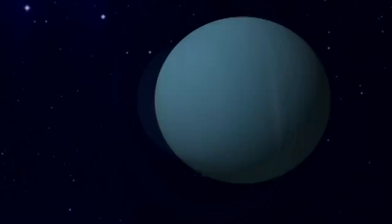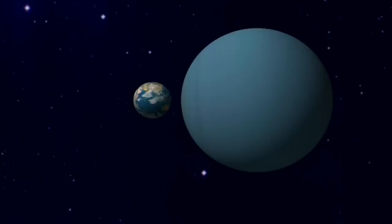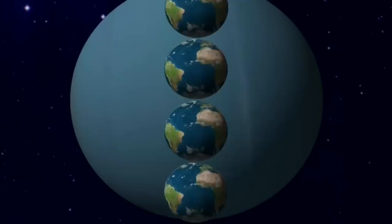Avec un diamètre de plus de 51,000 km, elle est bien plus grosse que la Terre. Mais ce n'est rien à côté de Jupiter, car si Uranus est une géante, Jupiter, elle, est une super géante.